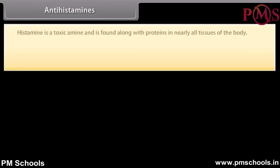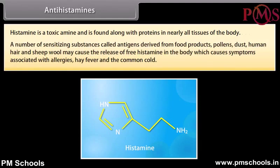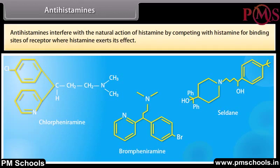Antihistamines: Histamine is a toxic amine found along with proteins in nearly all tissues of the body. A number of sensitizing substances called antigens derived from food products, pollens, dust, human hair, and sheep wool may cause the release of free histamine in the body, which causes symptoms associated with allergies, hay fever, and the common cold. An antihistamine relieves these symptoms by blocking the action of histamine. For example, chlorpheniramine, brompheniramine, and celdane. Antihistamines interfere with the natural action of histamine by competing with histamine for binding sites on the receptor where histamine exerts its effect.